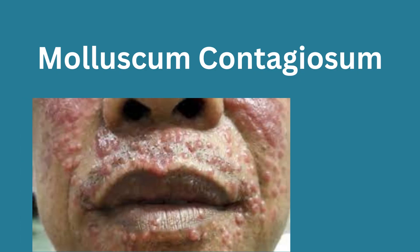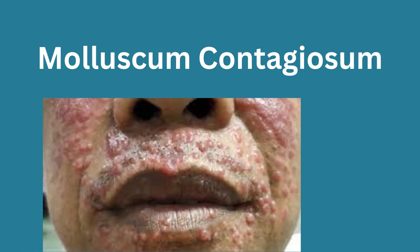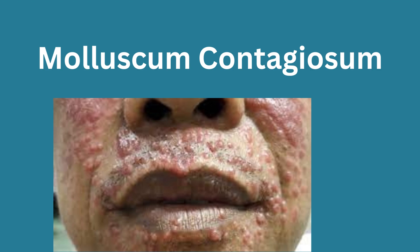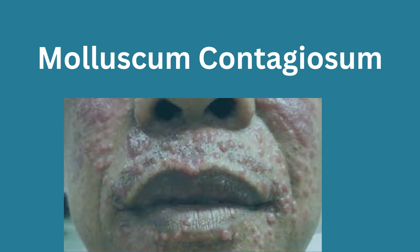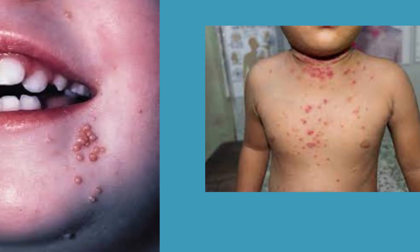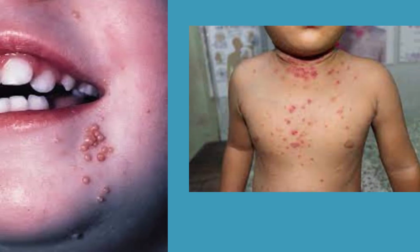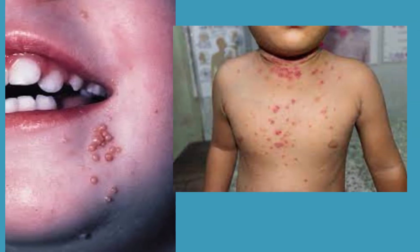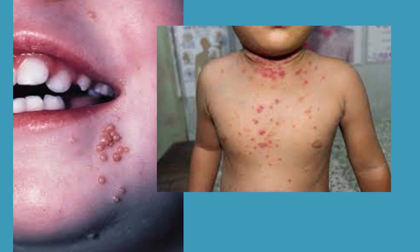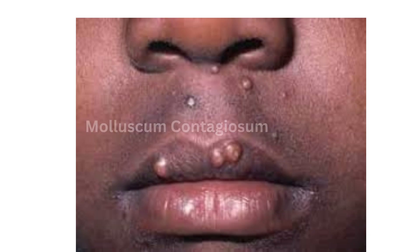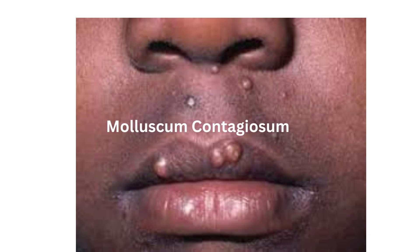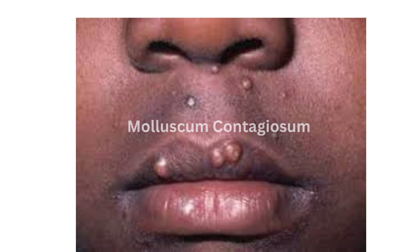6. Molluscum contagiosum. Molluscum contagiosum causes pink or flesh-colored bumps on the skin and is highly contagious. It can spread by skin-to-skin contact or simply by touching the same surface.